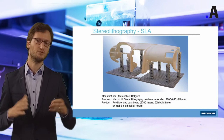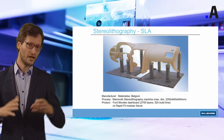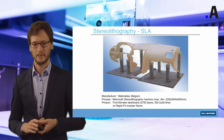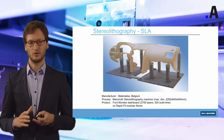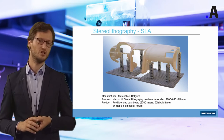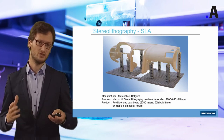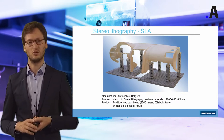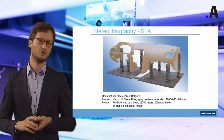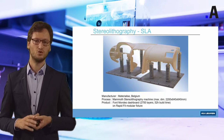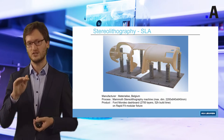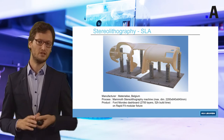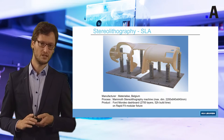Stereolithography can be easily upscaled, meaning we can produce very large parts. An example is the mammoth stereolithography machine, one of the largest in the world, present in the Belgian company Materialise. You can see a Ford Mondeo dashboard prototype shown here — 2,700 different layers stacked on top of each other, 52 hours of building time, with a length of over 2 meters.